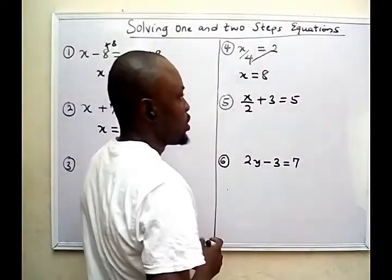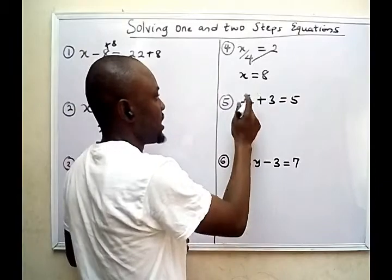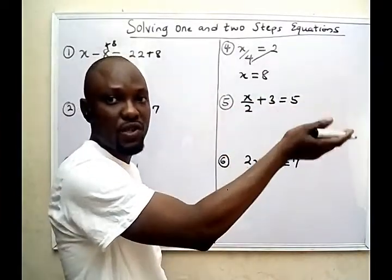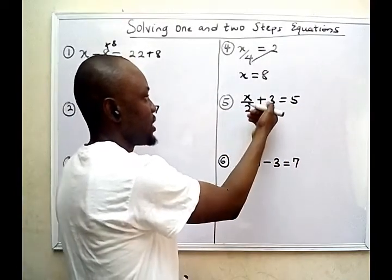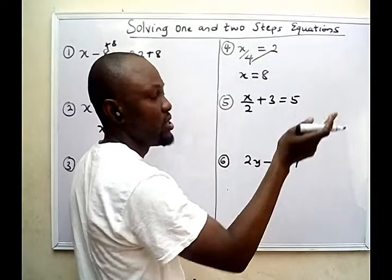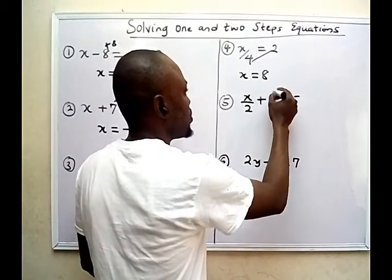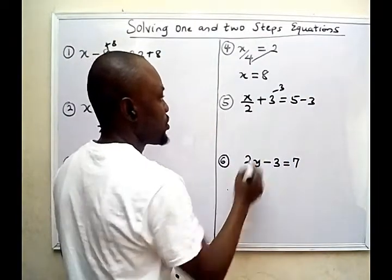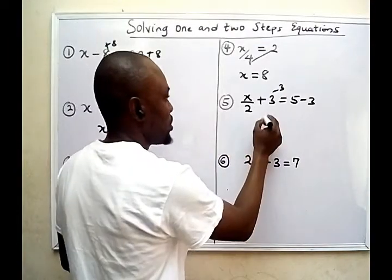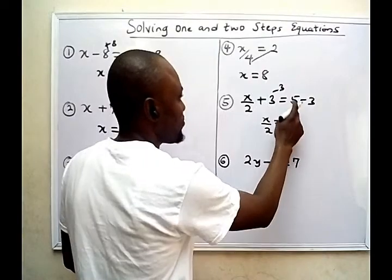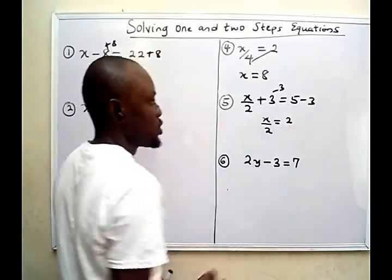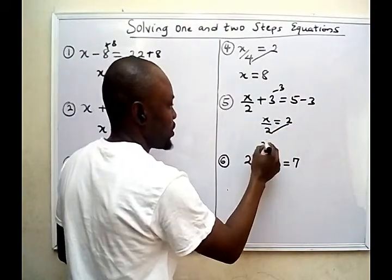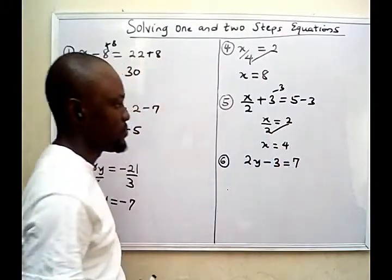Now the next question. We want the variable on one side and the numbers on the other side of the equation. I have a plus 3 here and I don't want it on this side, so I subtract 3 from both sides — 3 minus 3 gives me 0. So I now have x over 2 equal to 5 minus 3, which is 2. Then the next step is to find the value of the unknown by cross multiplying: x will be 2 times 2, which is 4.